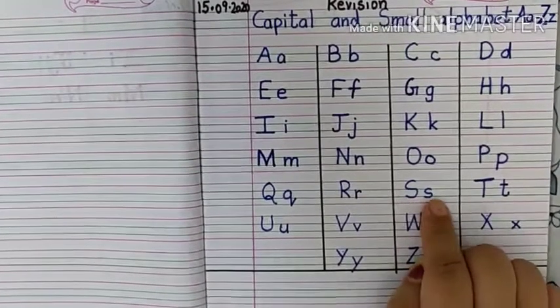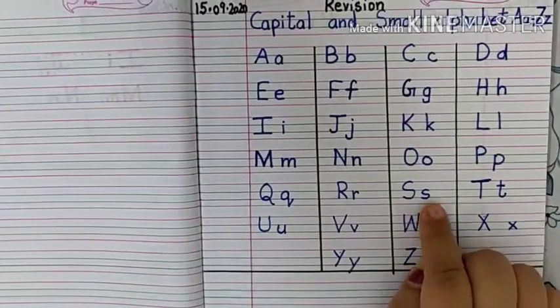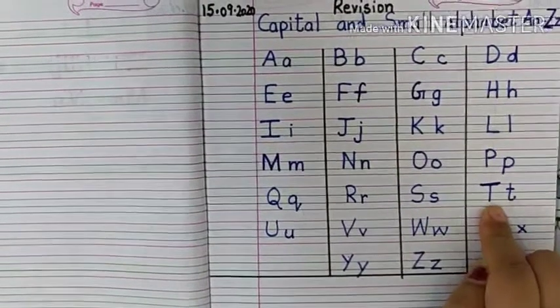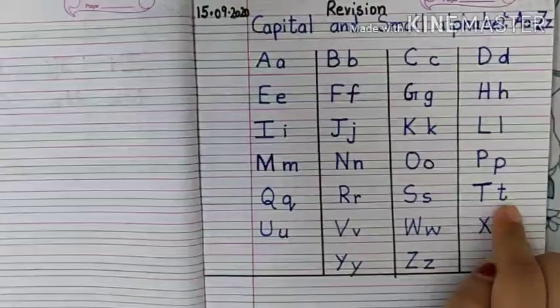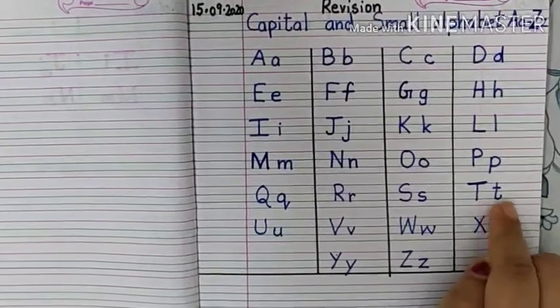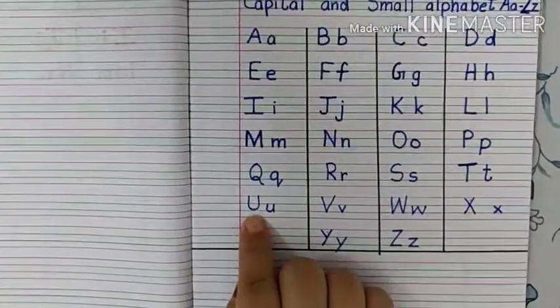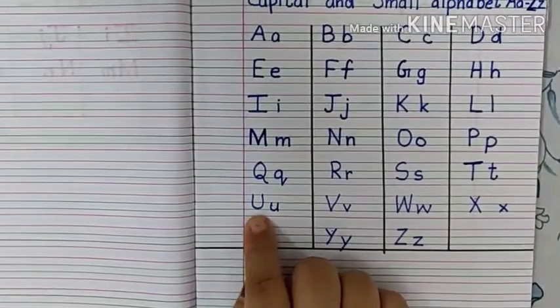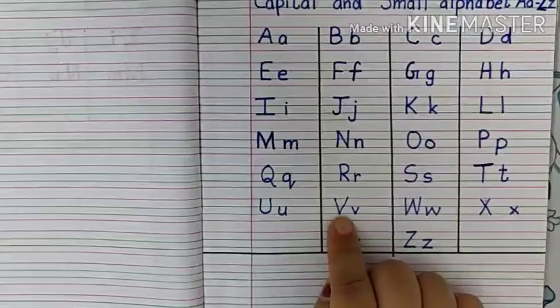Next, capital S, small s, S says Sh. Next, capital T, small t, T says T. Next, capital U, small u, U says A.